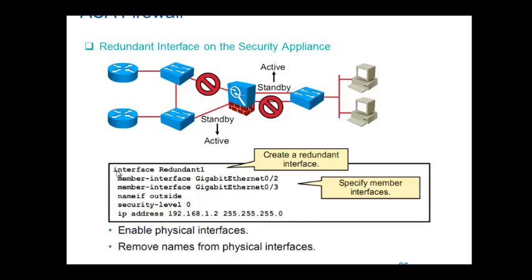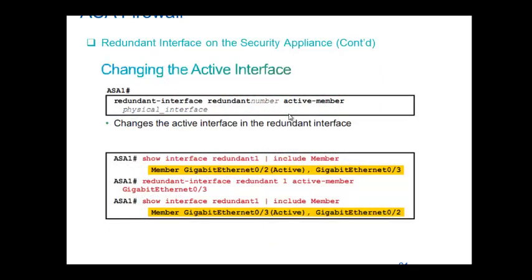This is how you create a redundant interface: in global mode, say 'interface redundant' and give a number from 1 to 8. Then specify which physical interfaces are members. For example, assigning E0/2 and E0/3 as members. Then give the name, security level, and IP address on the logical redundant interface — same as port channel configuration. If one active link goes down, the standby becomes active immediately.